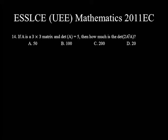Question number 14. If A is a 3x3 matrix and the determinant of A is equal to 5, then what is the determinant of 2 times A transpose times A? It's pretty simple to solve this problem if you are familiar with these two formulas. The first formula: determinant of A is equal to determinant of A transpose, which is given as 5.